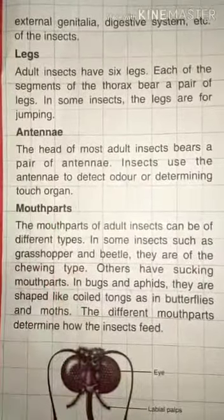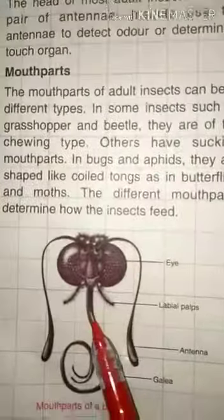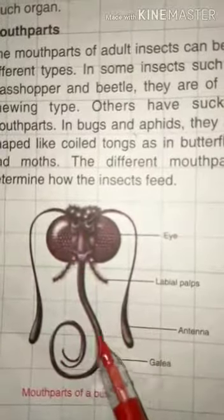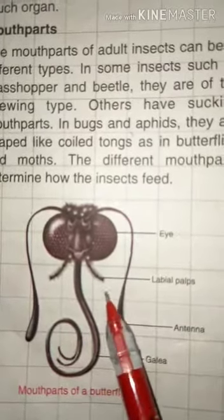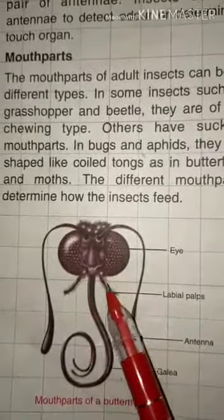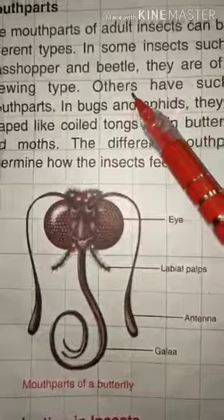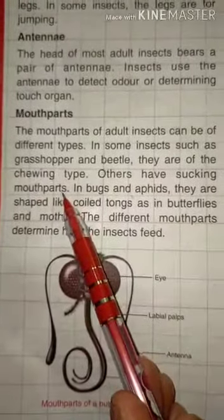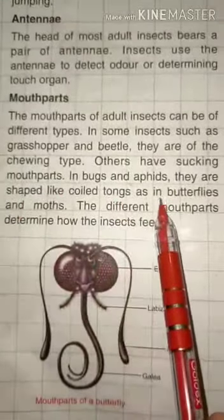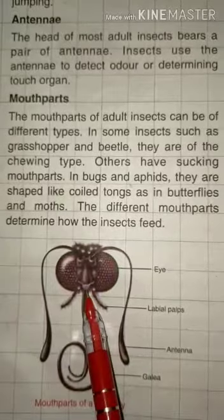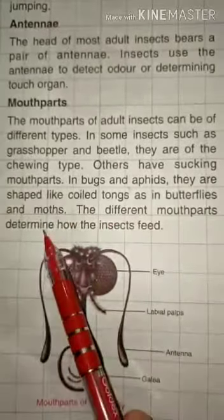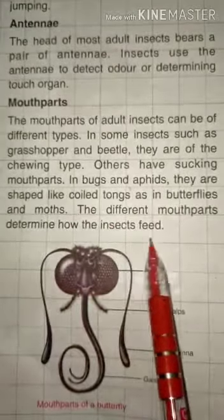Now next are the mouth parts. The mouth parts of adult insects can be of different types. In some insects such as grasshoppers and beetles, they are of the chewing type. Others have sucking mouth parts. In bugs and aphids, they are shaped like coiled tongues. In butterflies and moths, the different mouth parts determine how the insect feeds.